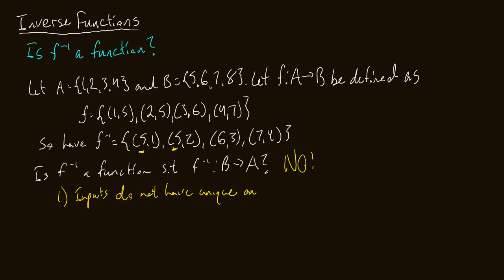The other reason isn't as obvious. We're asking if f inverse is a function from B to A, but notice we don't even cover the entire domain of B. We have 5, 6, and 7 — but what about 8? The domain of f inverse does not equal B. So that's another reason why this is not a function mapping B to A.